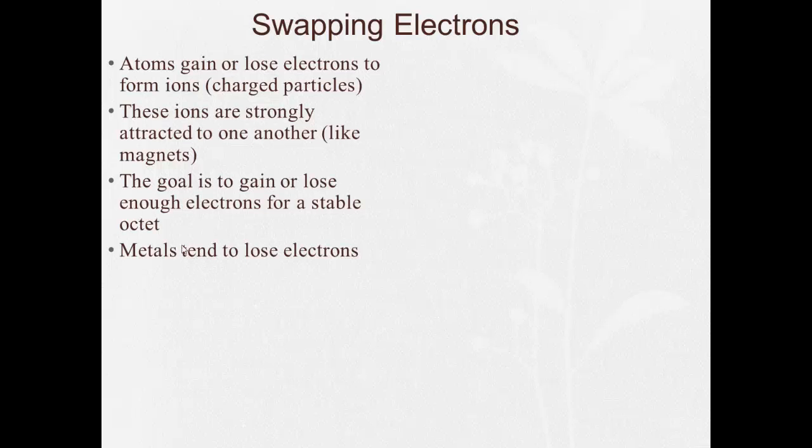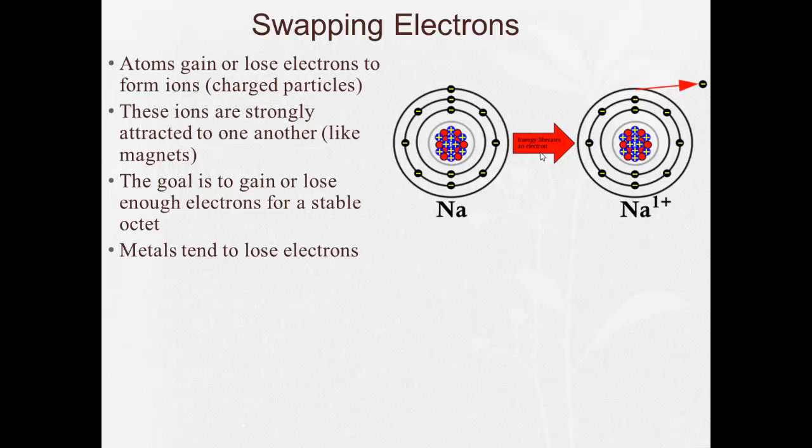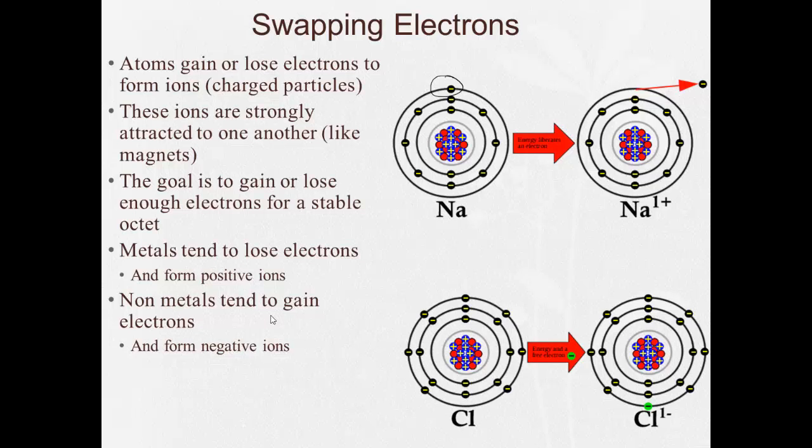Now, as we know, metals tend to lose electrons and form positive ions. So here's sodium, and it loses its valence electron. It loses it and forms a sodium ion, which has a charge of plus one. Nonmetals tend to gain electrons and form negative ions. So here's a chlorine, right? It has one, two, three, four, five, six, seven valence electrons. And it gains an additional electron and forms a chloride ion, a negative ion.